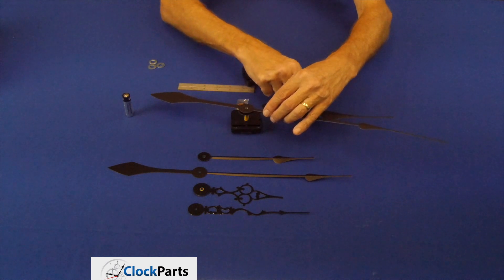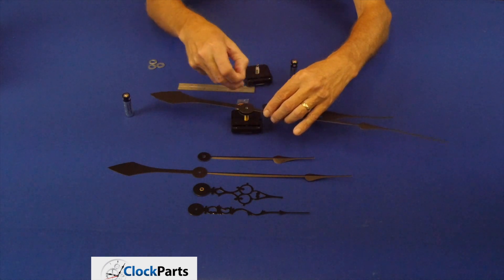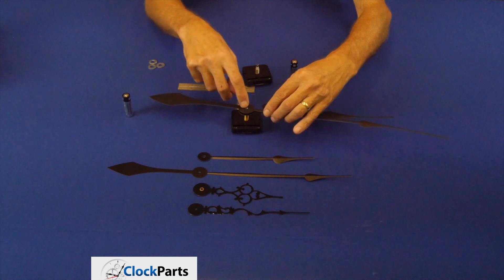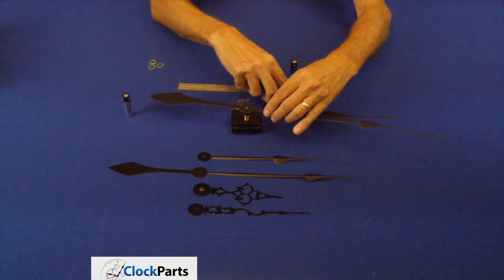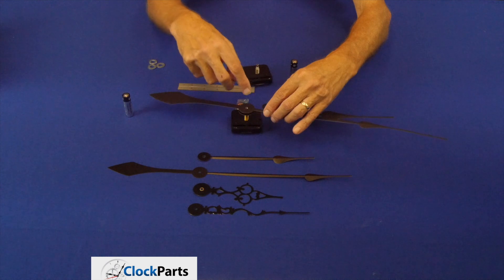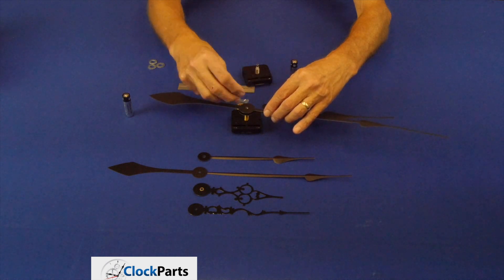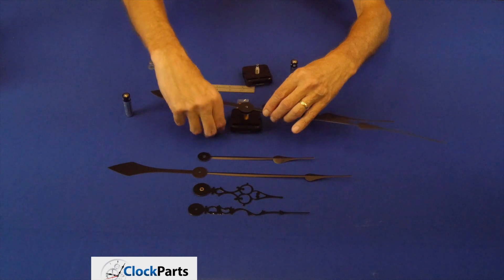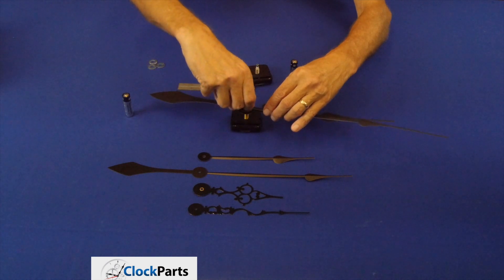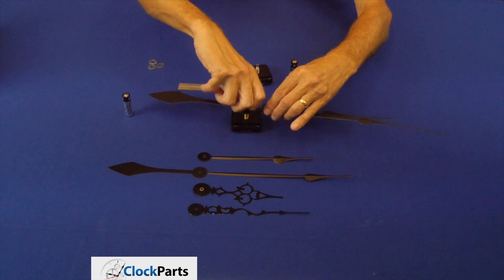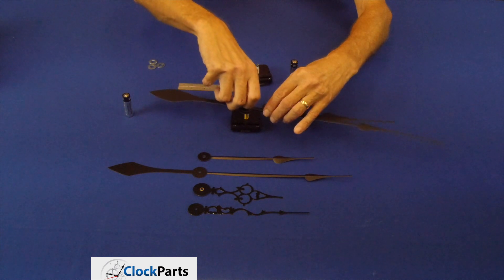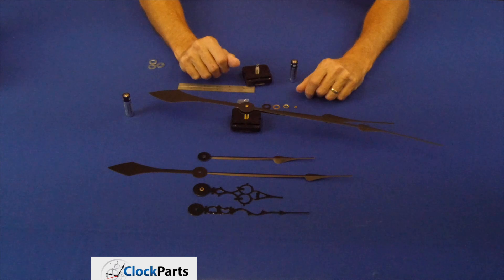Now if I was going to put a second hand on here, I would put the minute nut on and then the second hand. But in this case, I'm not going to put that on. So all I need to use is the cap nut. It has a really nice finish to it. And I just secure that. That's how you place the hands on.